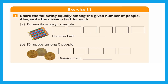Now let's see some examples of how to solve division by the sharing method. Share the following items — pencils, coins, or beads — equally among the given number of people, and write the division fact for each. The first question: 12 pencils to be shared among six people. Each box represents one person. To save time drawing, we represent one pencil as one line in the box.